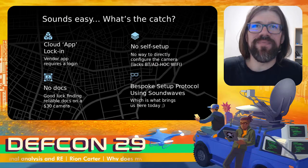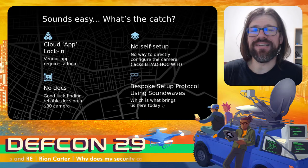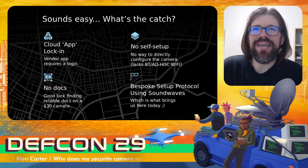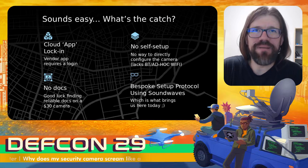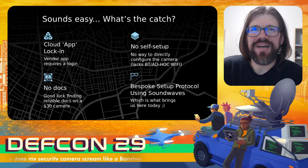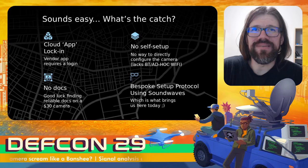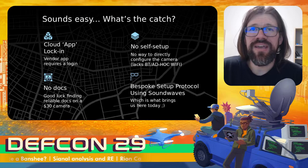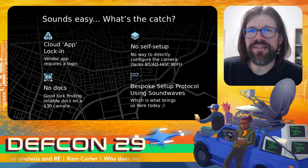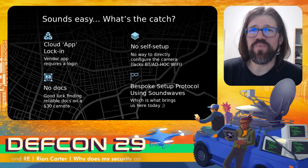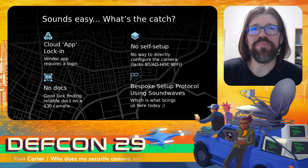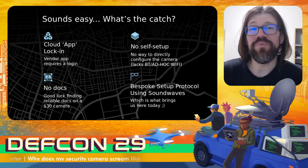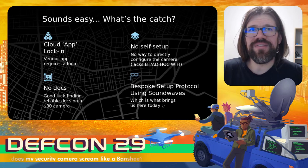So what's the catch? I discovered after purchasing the camera, unboxing it and examining it, that it requires a cloud application in order to enable and pair the camera. There's no way to self-set up the camera — no ad hoc wireless network, no Bluetooth connection. When you plug in the USB cable, there's no signals there whatsoever. Also, there's no documentation online about this camera to any real technical depth — not that I was expecting much from a $30 camera. What brings us here today is the bespoke protocol that the vendor application uses to communicate and configure the wireless camera.